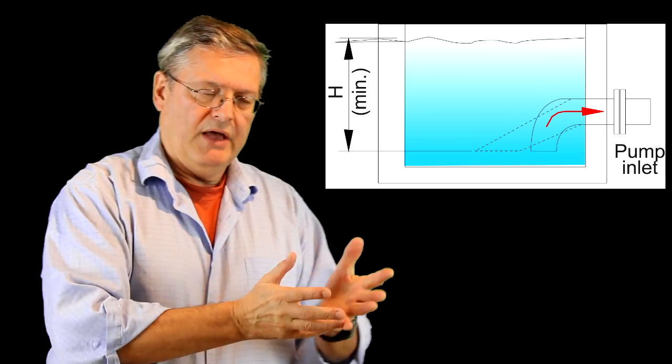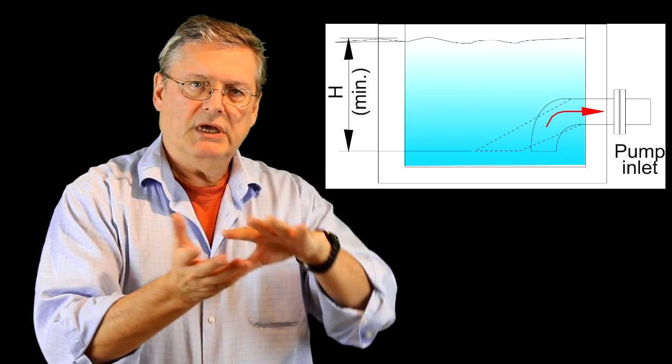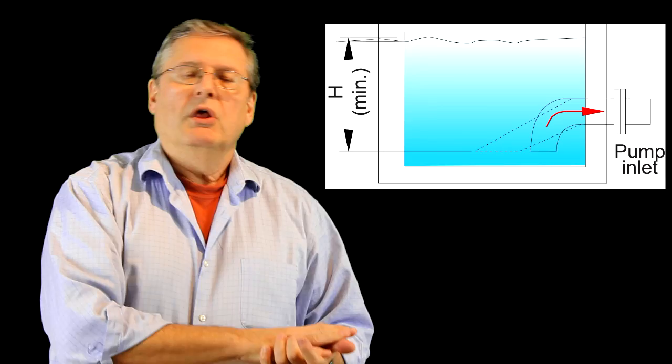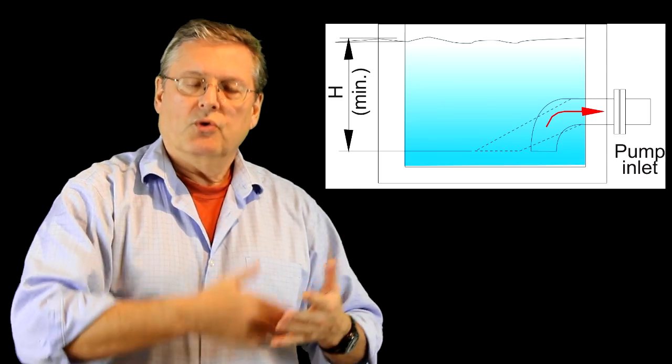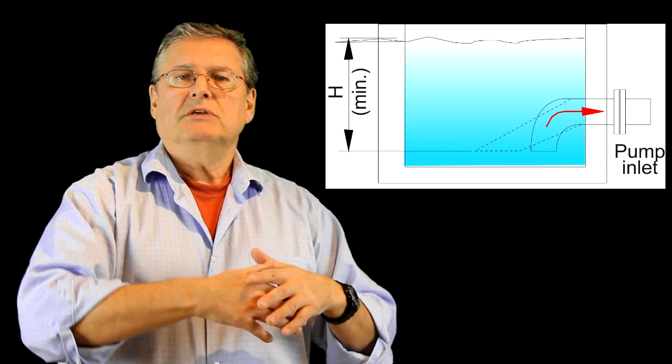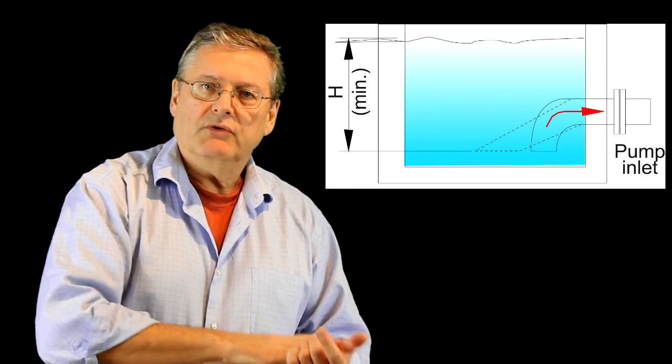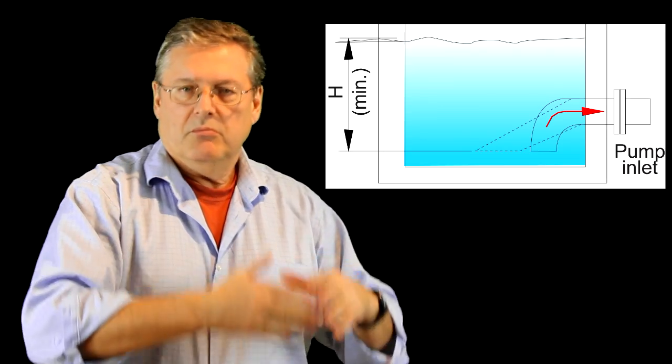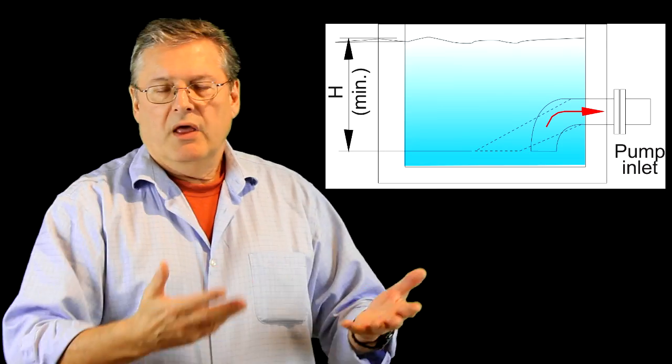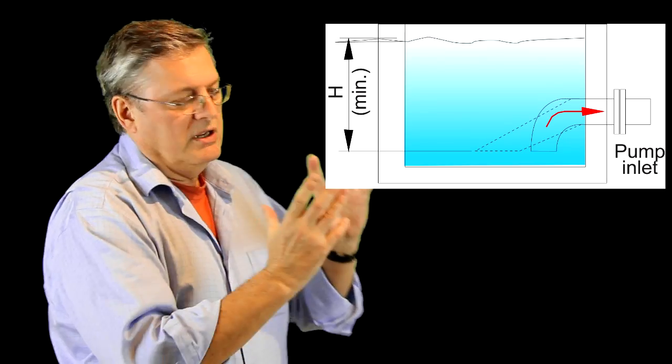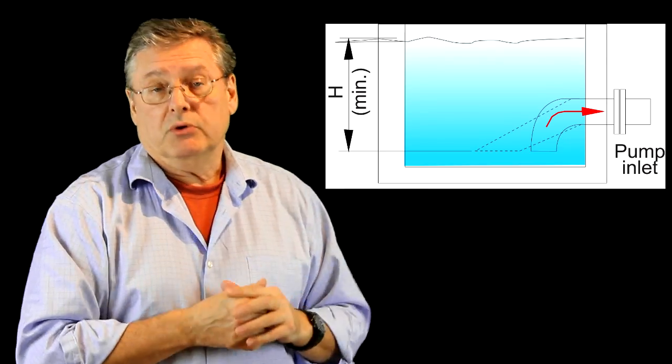The elbow has a big advantage in that the bottom of the elbow is lower, so we're getting greater submergence. This will help us avoid vortexing and we'll be able to empty that tank to a much greater depth than otherwise. The slanted is a compromise and the straight in would be the most economical.